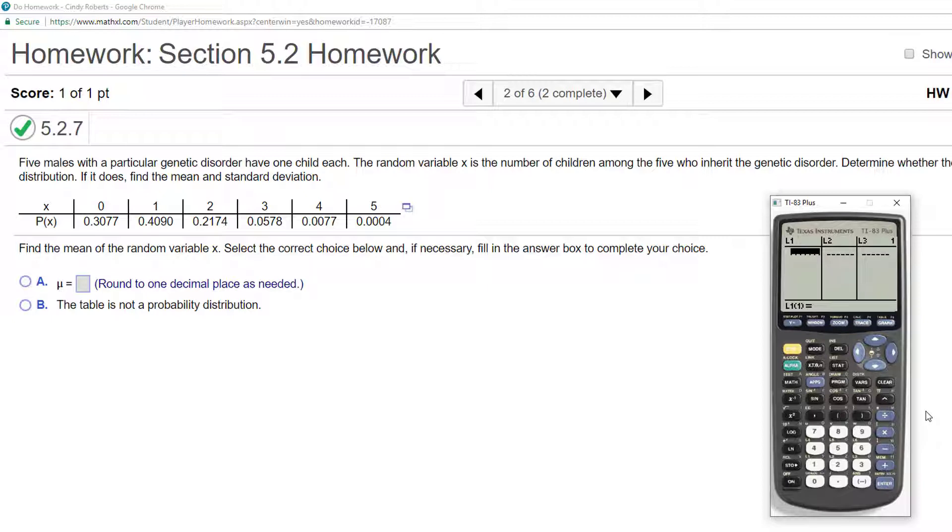I type in my x random variable, which is 0, 1, 2, 3, 4, 5, and I arrow over, and now I start typing in these probabilities. 0.4090, 0.2174, 0.0578, 0.0077, and 0.1234.